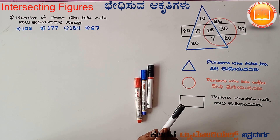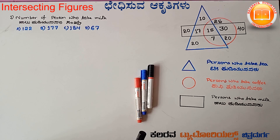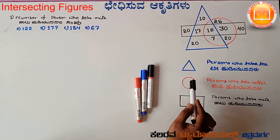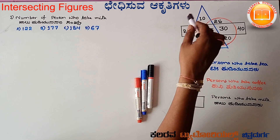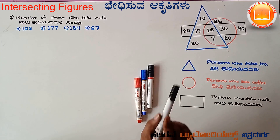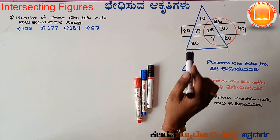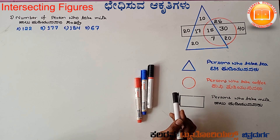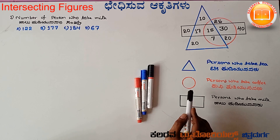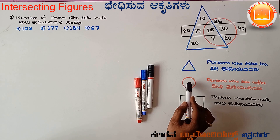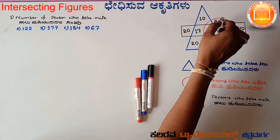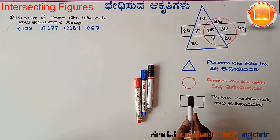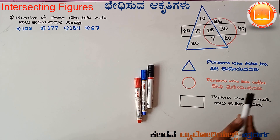The circle represents the persons who take tea. Within the circle, the numbers are 20, 30, 25, 15, and 7. All these numbers are related to the persons who take coffee.